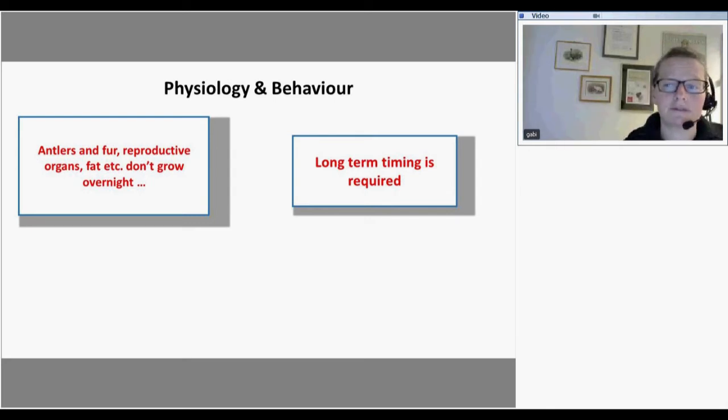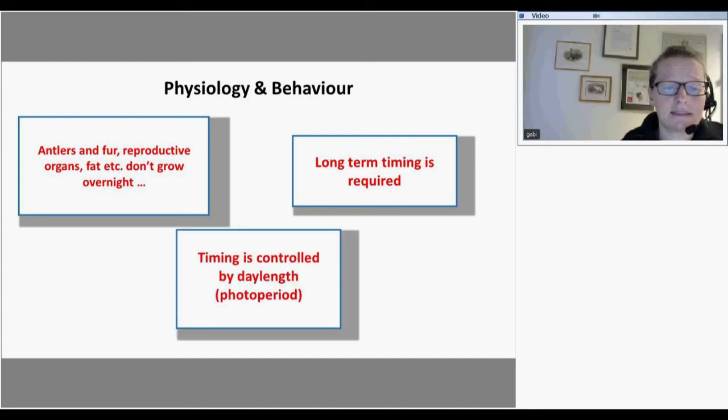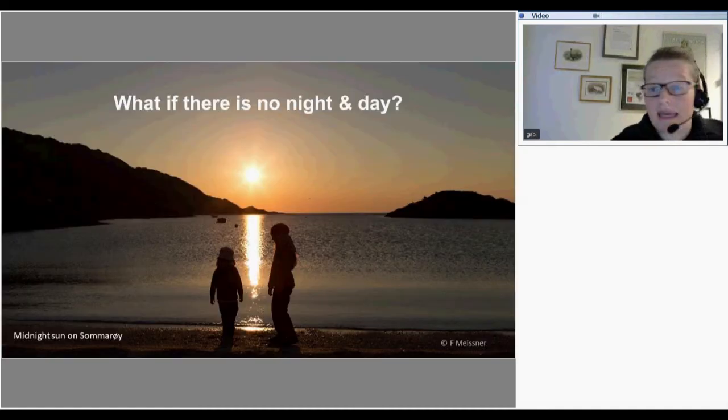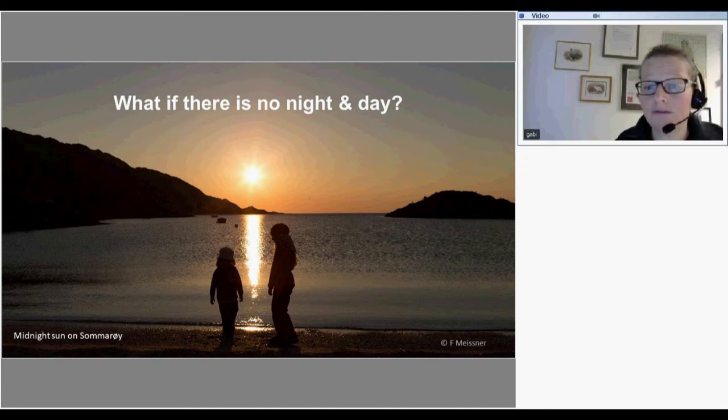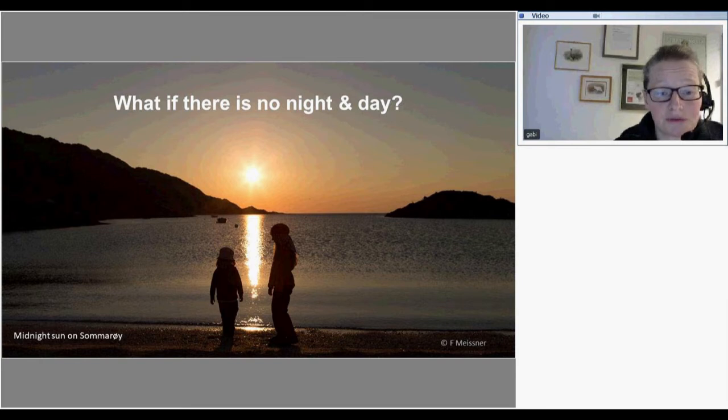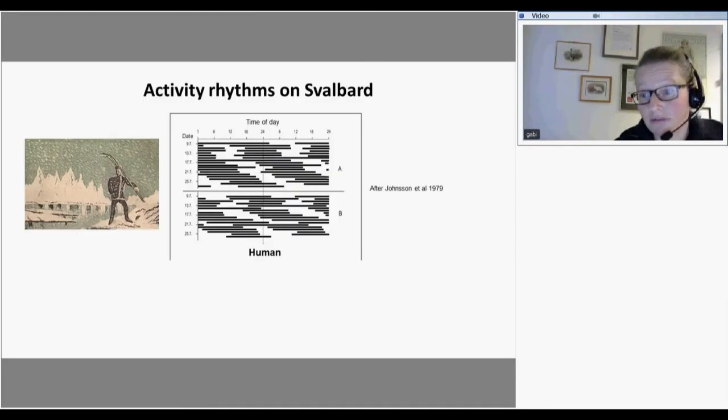This timing is controlled by day length. Or as we call it photo period. That is just the Greek word for day. Photo or light. Period means length. Again, what's the problem in the Arctic? There is of course no night and day. There is no photo period. It's just constant light or constant day. Or constant night. And that is of course difficult to use as a synchronizing agent. So what happens to organisms in the Arctic?